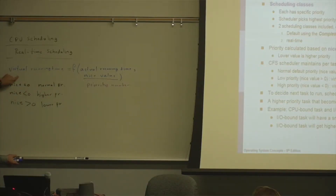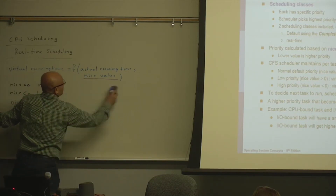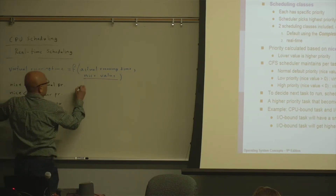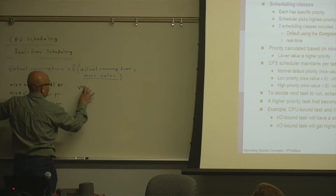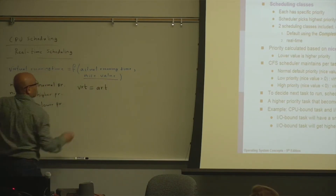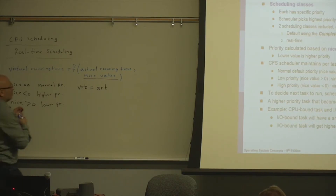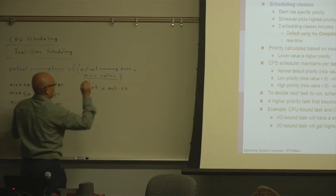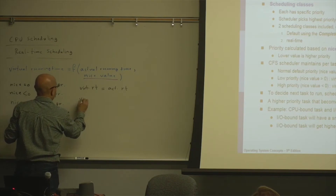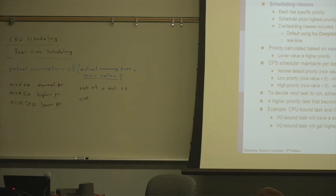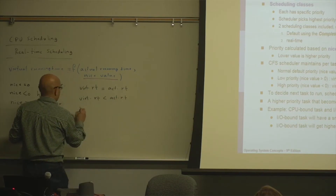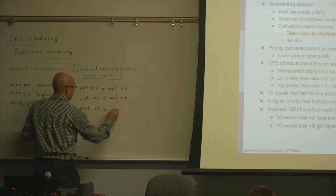The virtual running time is calculated based on the actual running time and the nice value. If a process is in the default category where nice equals zero, the virtual running time will be equal to the actual running time. For nice values less than zero, the virtual running time will be smaller than the actual running time. And for nice greater than zero, the virtual running time is greater than the actual running time.